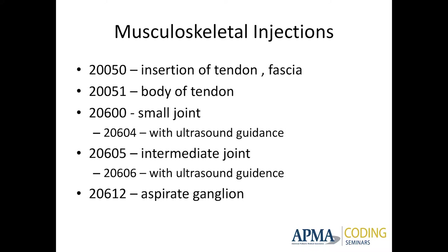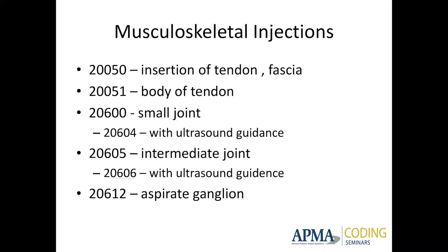There is a code for ultrasound-guided joint injection. There are codes — 20604 and 20606 — for ultrasound guidance injections. That code includes both the injection and the ultrasound visualization. You don't bill those two codes together. Previously you would bill the ultrasound visualization and the joint injection separately, but now there's a single code that combines them. So that's one report and one code. If you're billing the ultrasound-guided injection code, you don't need two separate reports — you can combine them into one report.